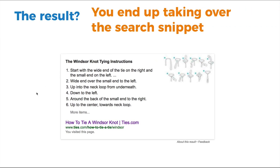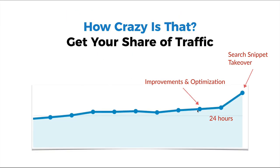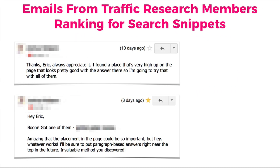After doing all this, you end up taking over the search snippet and essentially the entire top of the page for pretty much every single Google result. You can even push out existing search snippet results with your own. This is the impact: in a case study inside Traffic Research, we made the optimization improvements and within about 48 hours we refreshed and took over a search snippet, getting a significant traffic increase. People inside Traffic Research have been doing this and getting tons of rankings. One member discovered that placement matters — they were putting the search snippet at the bottom of a 4,000-word article. We moved it to the top, and within hours they had search snippet rankings.